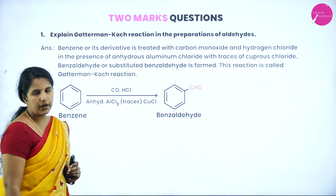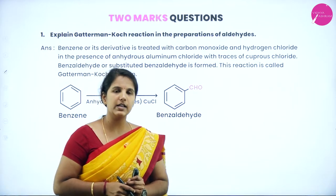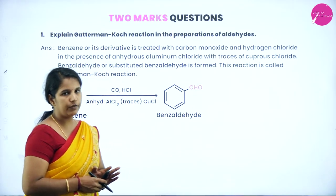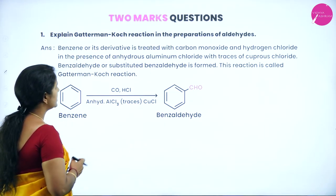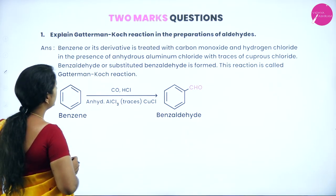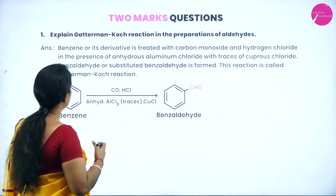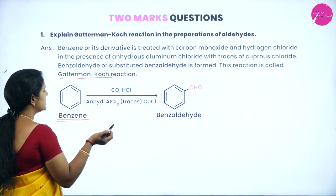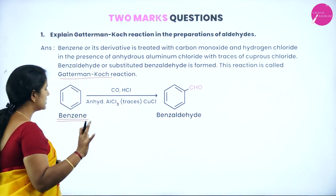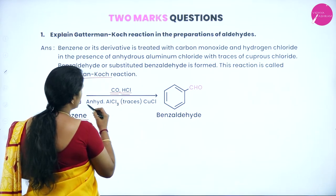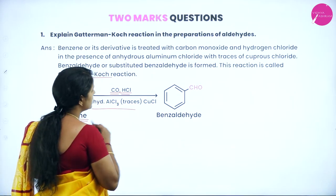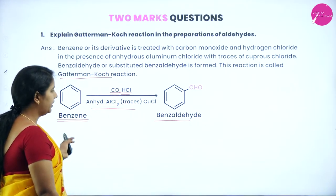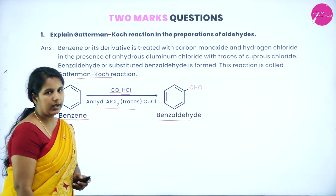Explain the Gattermann-Koch reaction for the preparation of an aldehyde. When benzene or its derivatives are treated with carbon monoxide and hydrogen chloride in the presence of anhydrous aluminium chloride with a trace of copper chloride, benzaldehyde or a substituted benzaldehyde will be formed. This reaction is known as the Gattermann-Koch reaction. The aldehyde group is introduced into the benzene ring using CO and HCl.